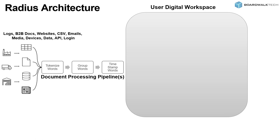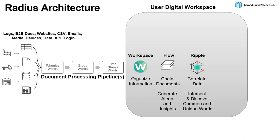With the Radius Control Tower, we've taken a very different approach. These are documents, and users should be able to interact with this information in what we call their digital workspace. As documents come in, they go through what we call our document processing pipeline. We describe this as words, not data — our logo is 'NoSQL' — because if you have to take a PDF file, an API, or an XML document and write all the database connections, it basically never ends.